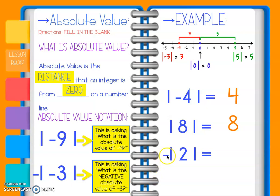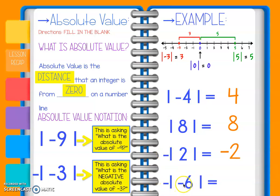This one looks a little different — it is: what is the negative absolute value of positive 2? We know the absolute value is 2, but the negative value of that would give us negative 2. That negative is on the outside, so our answer is negative. And this one says: what is the negative absolute value of negative 6? We know the absolute value of negative 6 is 6, and so the negative value of that is negative 6.